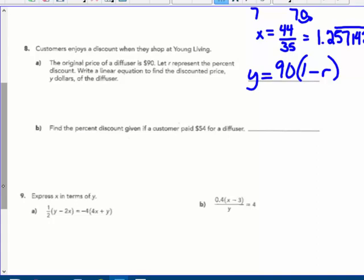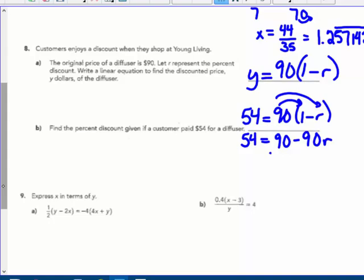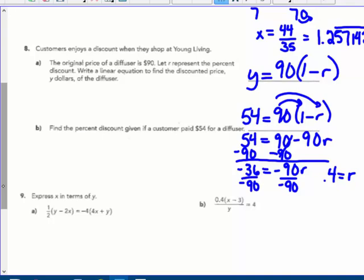Find the percent discount given if a customer paid $54. So now I know the cost, which is the Y. So 54, I'm just going to plug that into my equation that I wrote in the first part: 54 equals 90 minus what percent of discount? I don't know. So I'm going to distribute that 90, and I get 54 equals 90 minus 90R. Subtracting 90 from both sides, I get negative 36 equals negative 90R. Dividing by that negative 90, I get 4 tenths equals the rate, the rate of discount. So it wants to know, find the percent. Well, 4 tenths changed to a percent would be a 40% discount. So purchasing that diffuser at $54, it must have been 40% off.